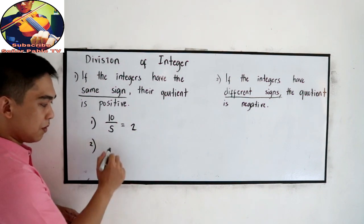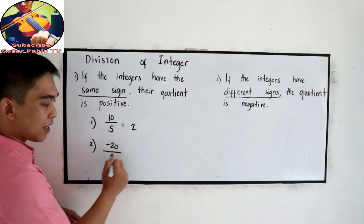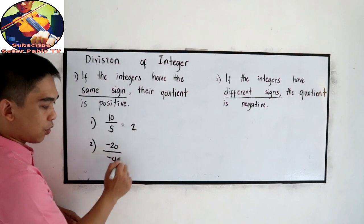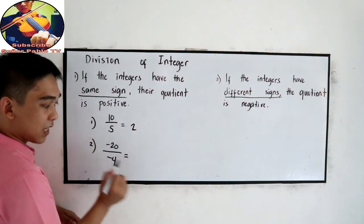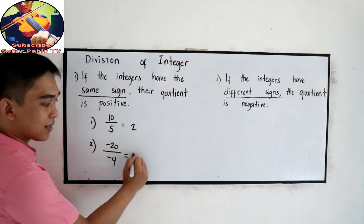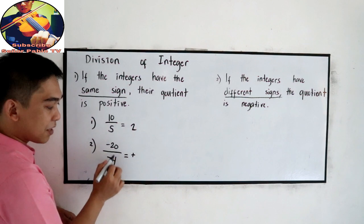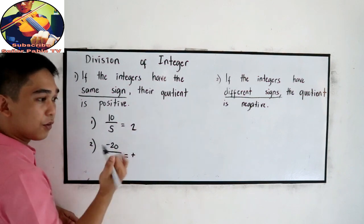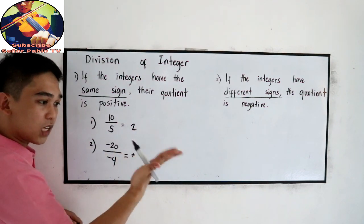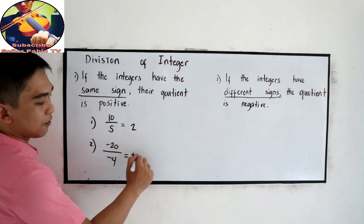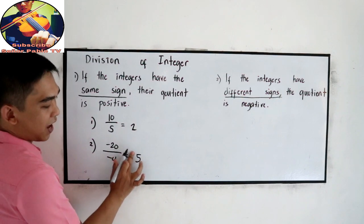Number 2: negative 20 divided by negative 4. Negative by negative, so that is positive. 20 divided by 4 — 4, 8, 12, 16, 20 — so that is 5, or simply 5.